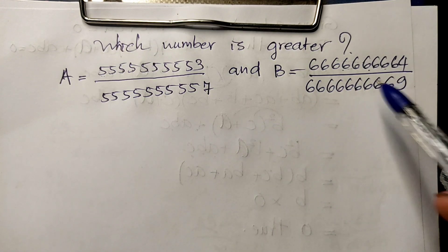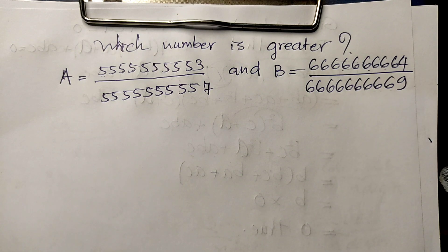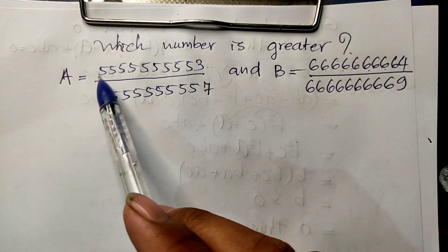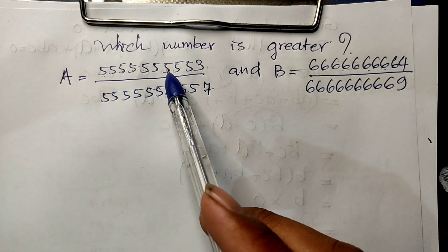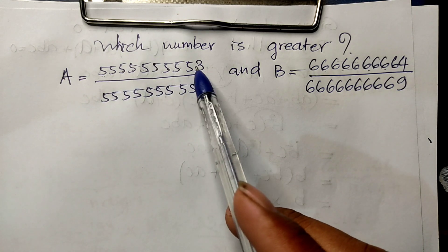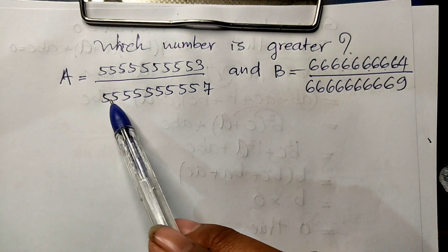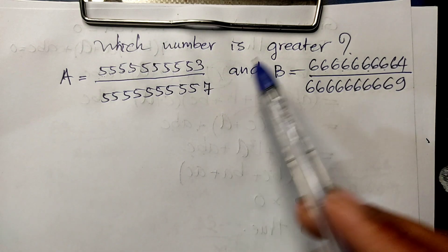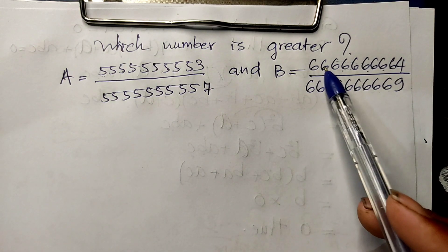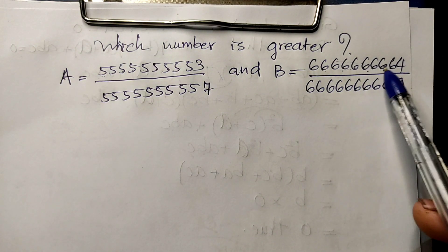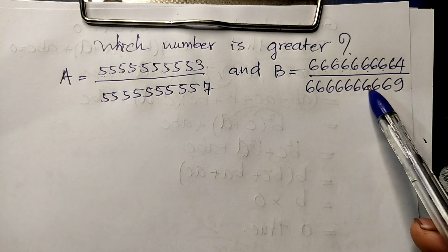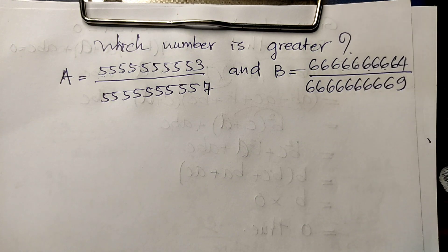Compare these numbers. Now we count: it's 1, 2, 3, 4, 5, 6, 7, 8, 9, 10 digits — and this one is also 1, 2, 3, 4, 5, 6, 7, 8, 9, 10 digits.